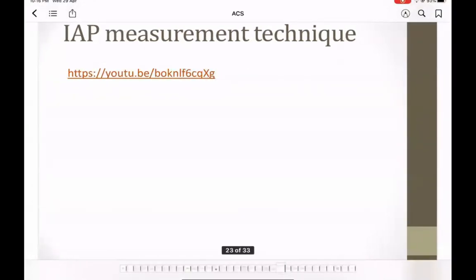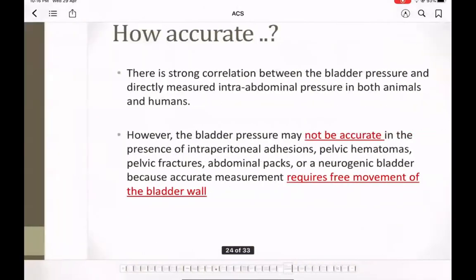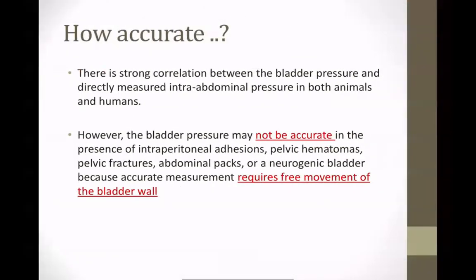The bladder technique is the most accurate compared to other methods. However, its accuracy can be reduced significantly in patients with adhesions or a neurogenic bladder. Accurate measurement requires free movement of the bladder wall — anything that impairs that will lead to a reduction in accuracy.